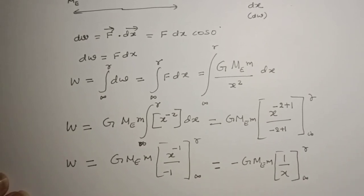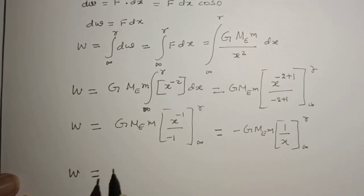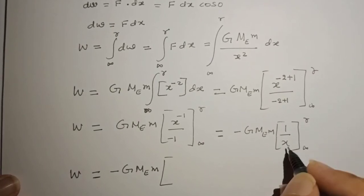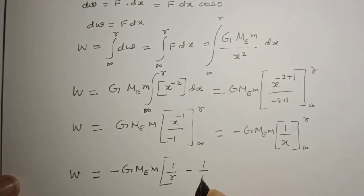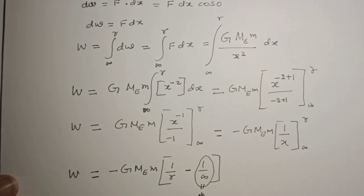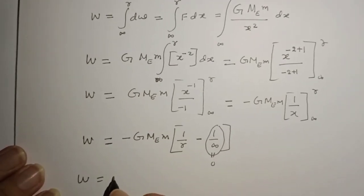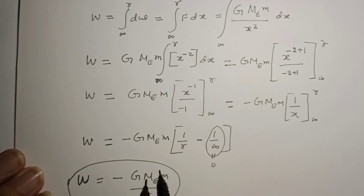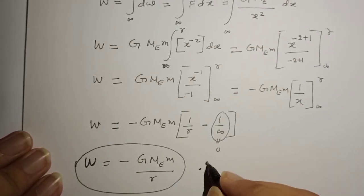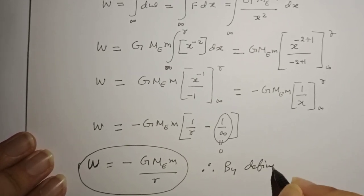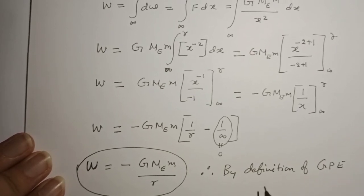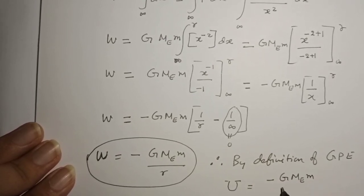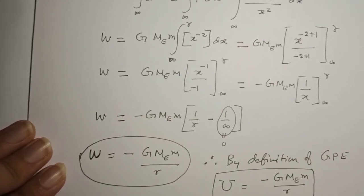Applying the limits: W equals minus G M_e m times (1/r minus 1/infinity). Since 1/infinity equals 0, work done equals minus G M_e m divided by r. According to the definition, work done in displacing the body from infinity to r is itself the gravitational potential energy. Therefore, by definition, gravitational potential energy U equals minus G M_e times m divided by r. This is the equation for gravitational potential energy.